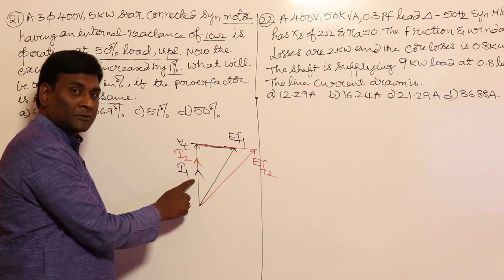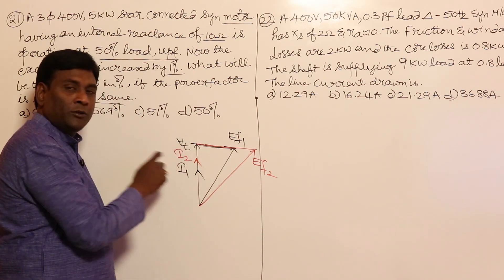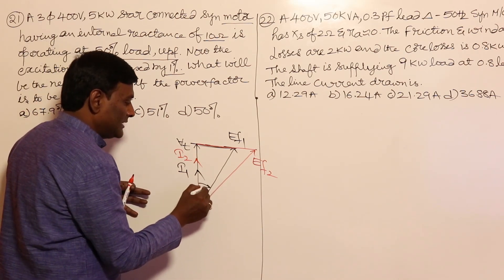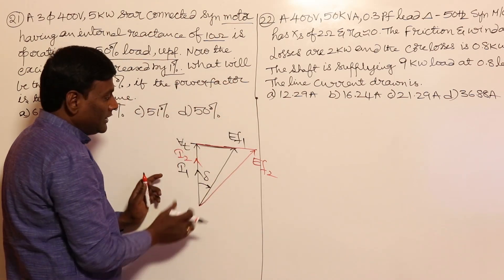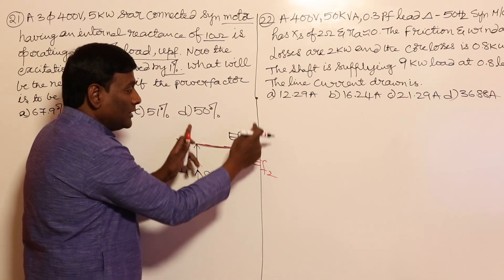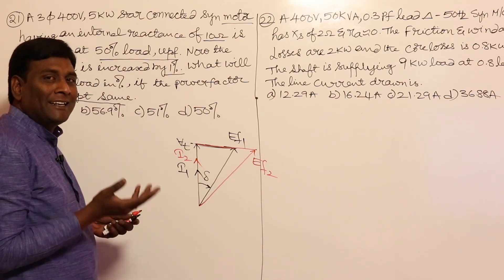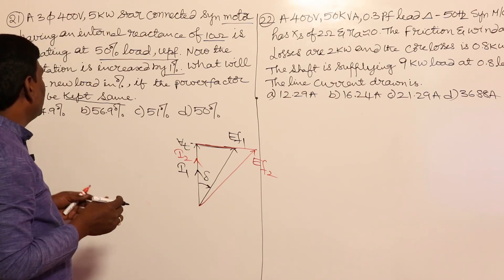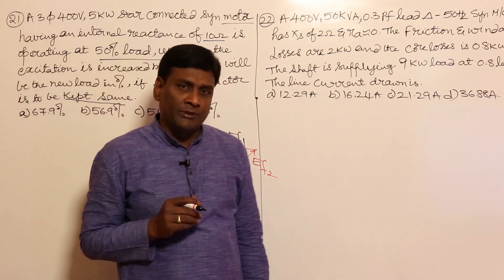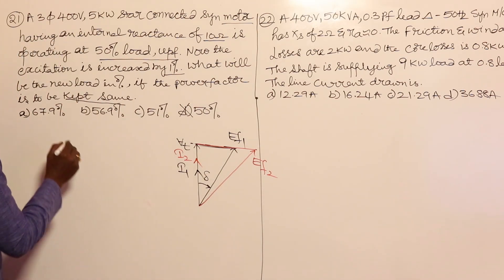In both cases, the machines operate at unity power factor. The active power — proportional to Ef·sin(delta) — increases when Ef2 is larger than Ef1, so delta also increases. Therefore, the output power is increased. We can directly conclude that the answer cannot be 50 percent; it must be more than 50 percent. Now let us solve numerically.